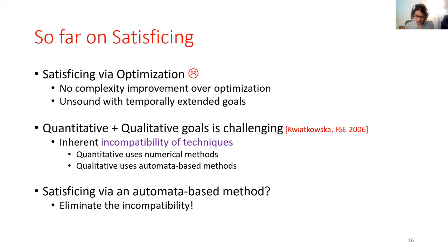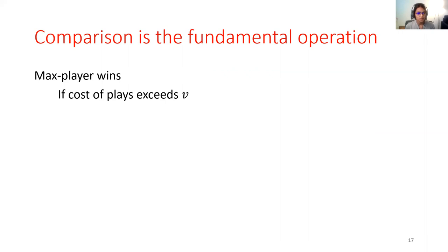So, to start developing this algorithm, let's first take a step back and try to understand what the most fundamental operation in satisficing is. And I claim it is the operation of comparison. Recall, the maximizing player wins if the cost of plays exceeds a threshold value. This is nothing else but saying that the discounted sum of a sequence exceeds a fixed value.